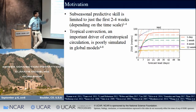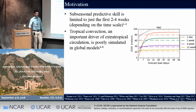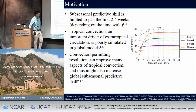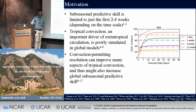As we all know, tropical convection is a very important driver of extra-tropical circulation via atmospheric teleconnections, and that is also poorly simulated in these really coarse-resolution GCMs. So we thought: maybe by going to convection-permitting resolution, we can improve many aspects of tropical convection on numerous timescales, and therefore improve the associated teleconnections and maybe also improve extra-tropical sub-seasonal forecast skill.